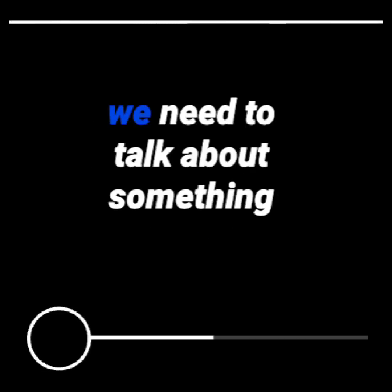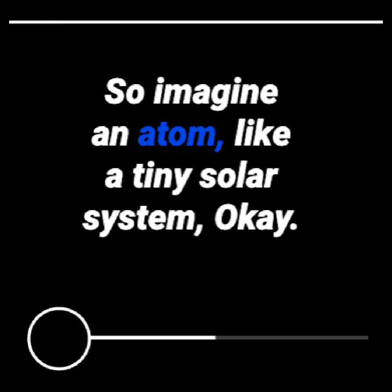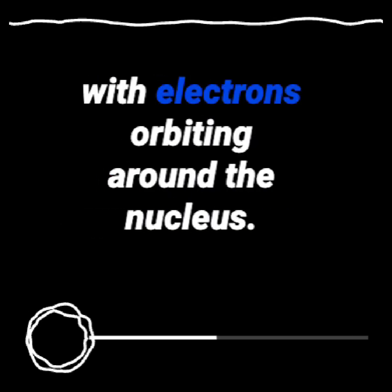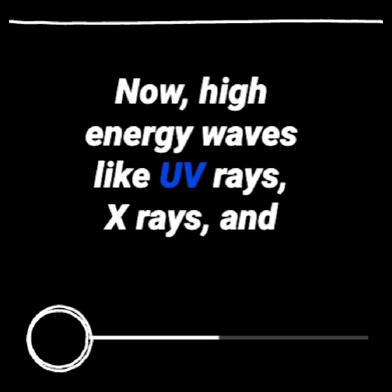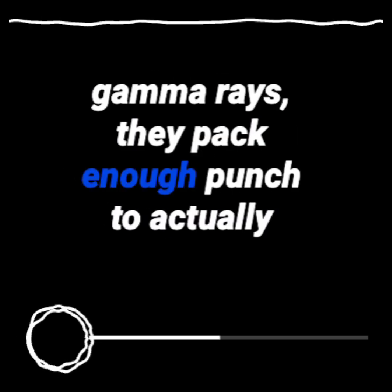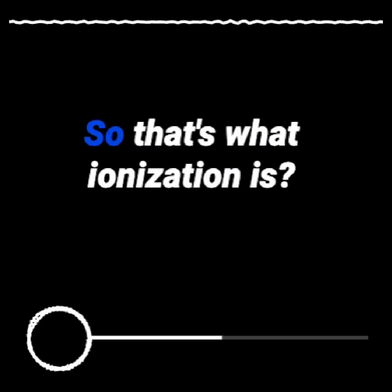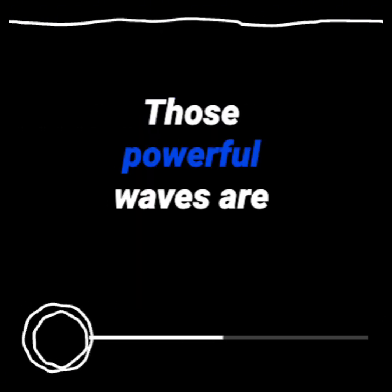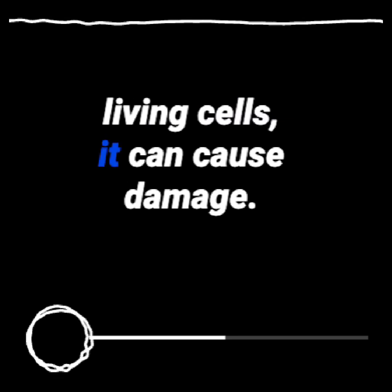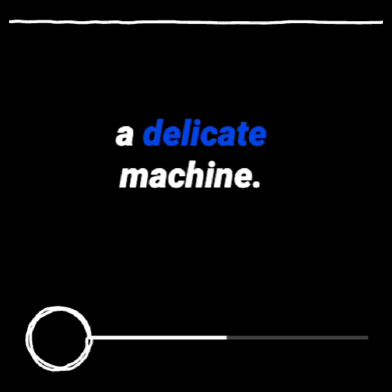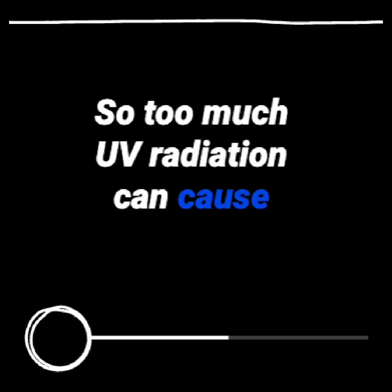To understand why some of these waves are more dangerous than others, we need to talk about ionization. Imagine an atom like a tiny solar system, with electrons orbiting around the nucleus like planets around the sun. High energy waves like UV rays, X-rays, and gamma rays pack enough punch to actually knock those electrons out of their orbits - like a cosmic game of billiards. That's what ionization is: powerful waves knocking electrons off of atoms. When that happens to atoms in living cells, it can cause damage - like throwing a wrench into a delicate machine.